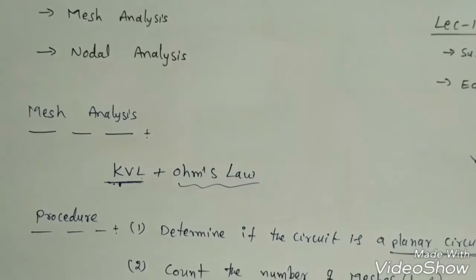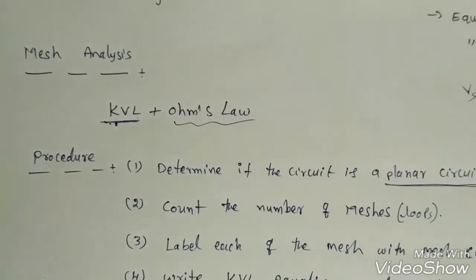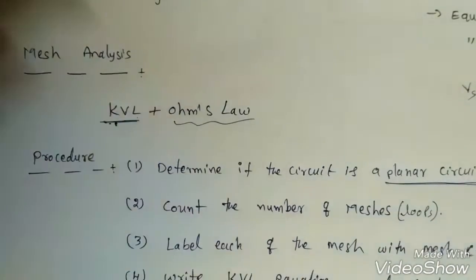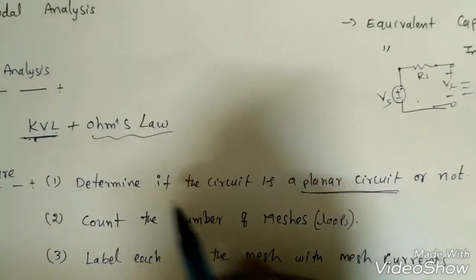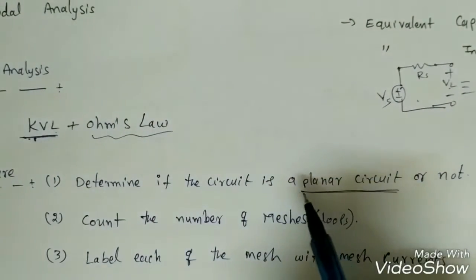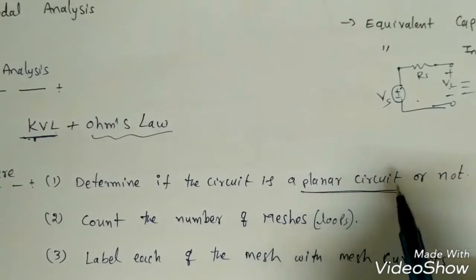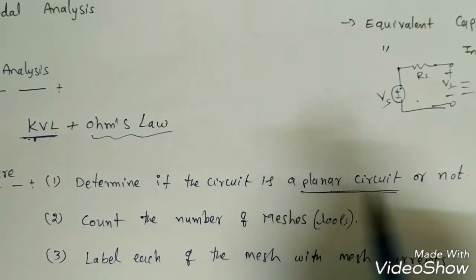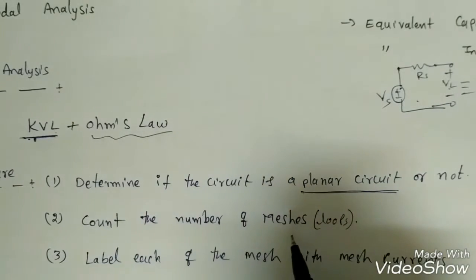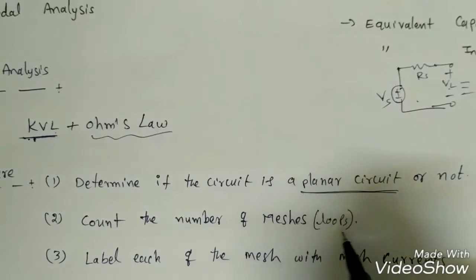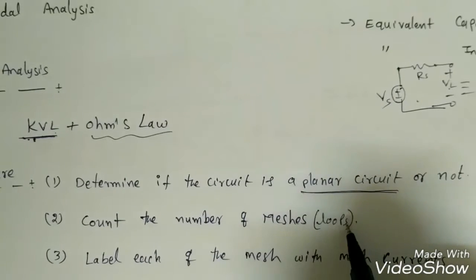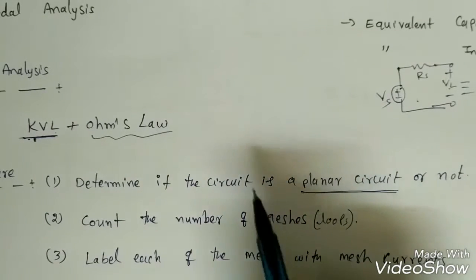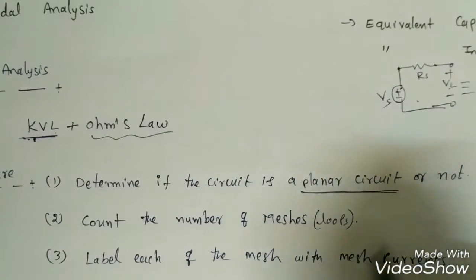There is a standard procedure for mesh analysis. First, determine if the circuit is a planar circuit or not — mesh analysis is only applicable for planar circuits. Next, count the number of meshes, or loops. Then label each mesh with a mesh current: I1, I2, I3, and so on.